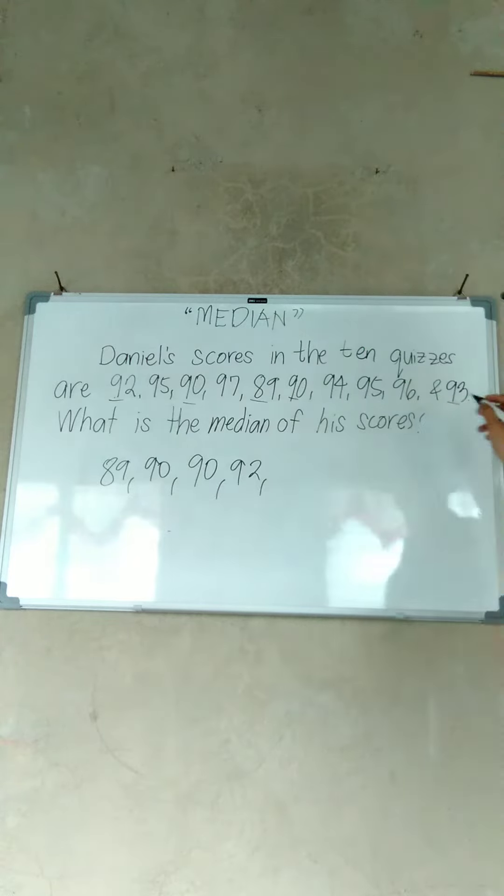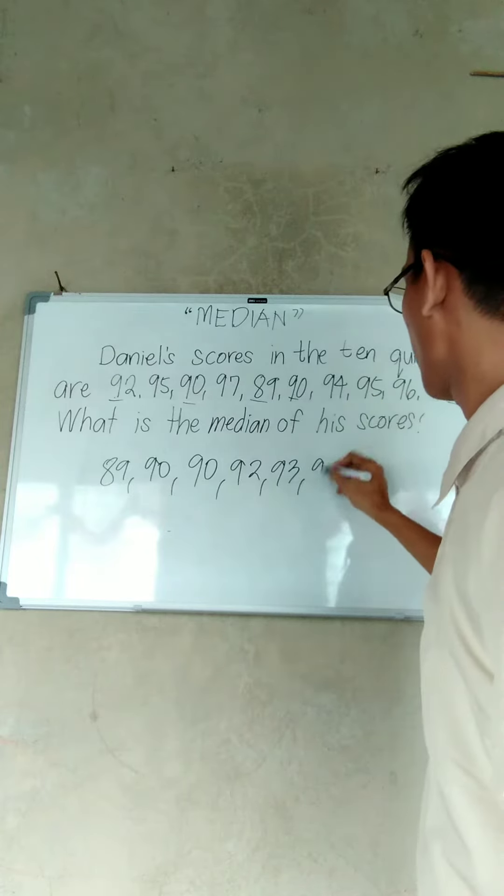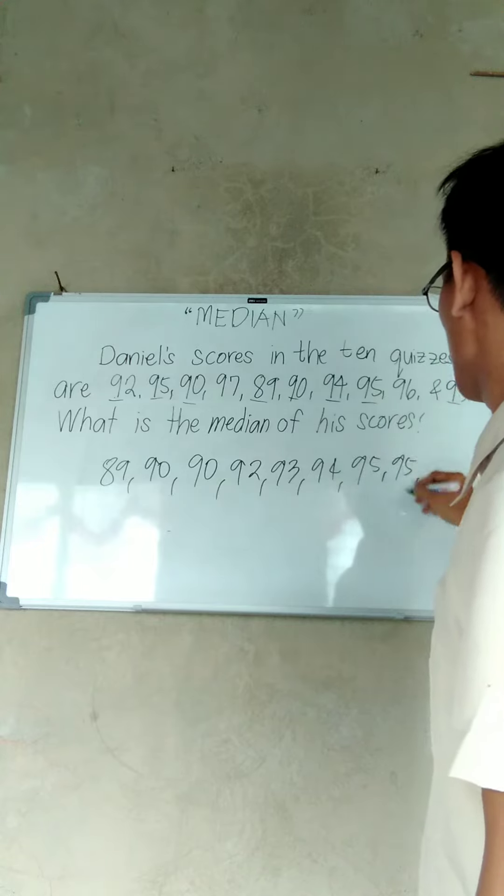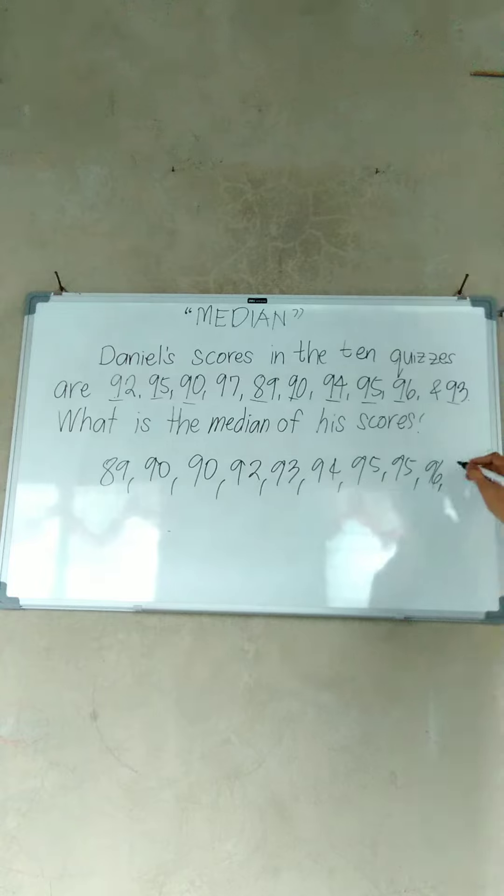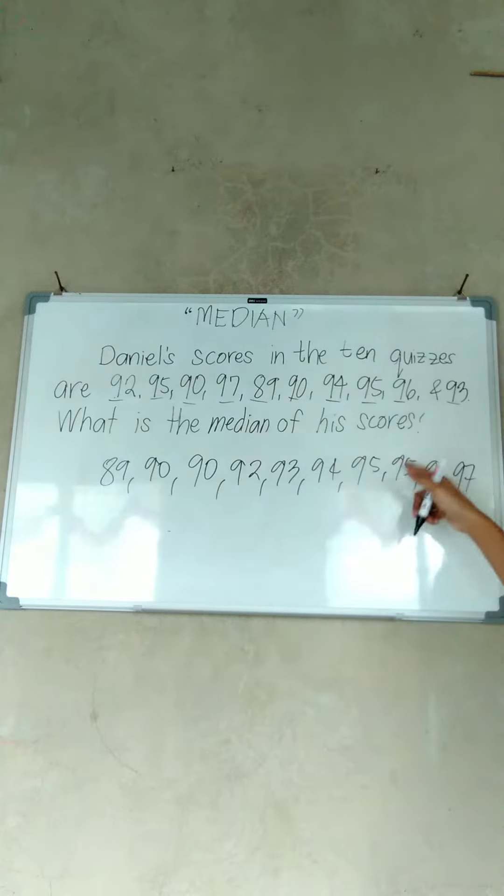Next is 93. Next will be 94. And then we have two 95s, and then 96 and 97. So 1, 2, 3, 4, 5, 6, 7, 8, 9, 10.